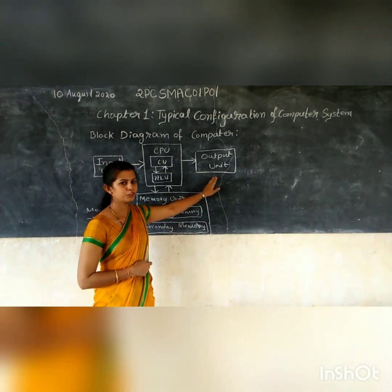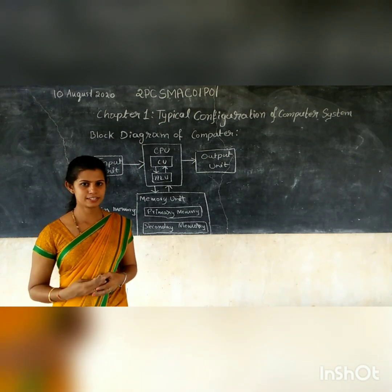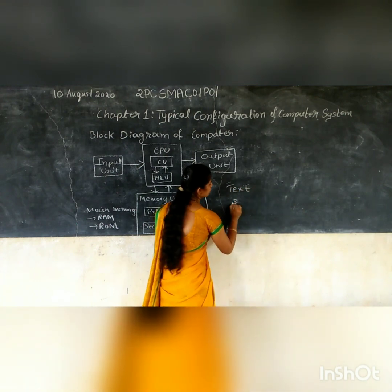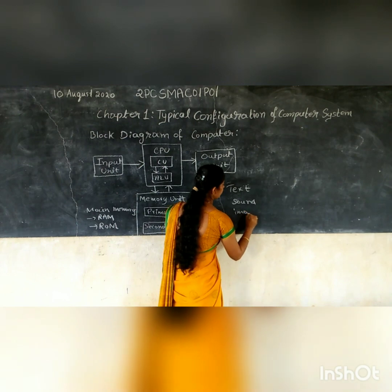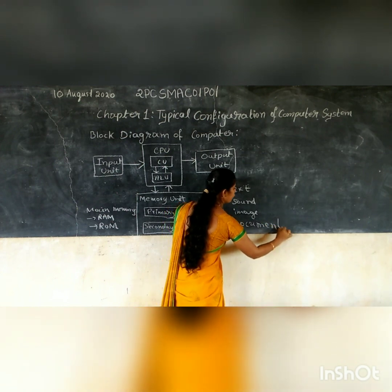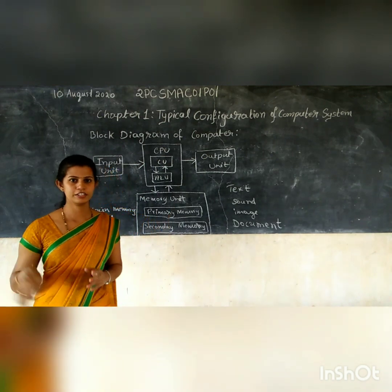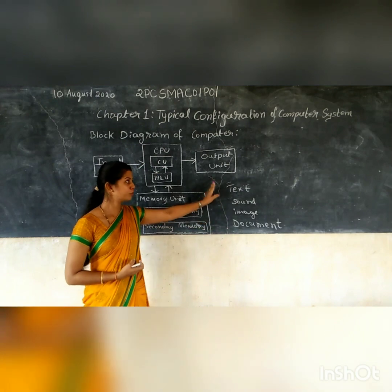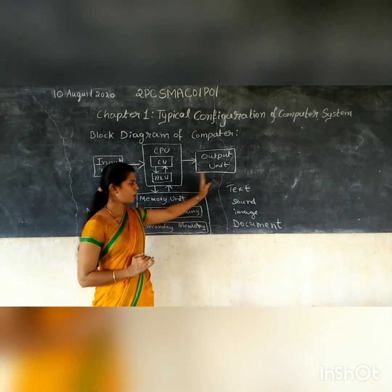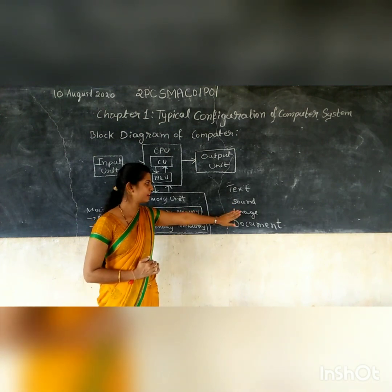Next is output unit. Output unit is used to display the output to the user or to print the output result. The output can be in the form of text, sound, image, or document. The computer sends output to the monitor via the output unit, and also sends output to the printer to print, and sound output is sent to the speaker.